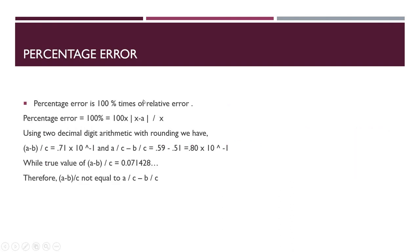Percentage error is 100% of relative error. We put the formula of relative error here, multiplied by 100. Using two-decimal-digit arithmetic with rounding, we have the example: (a minus b) divided by c.